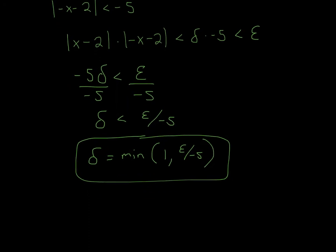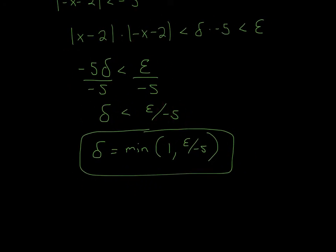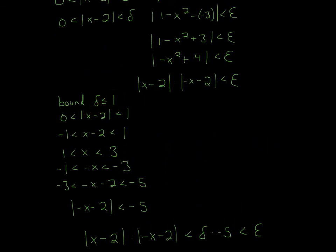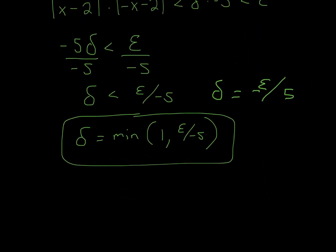Since we want the actual delta, we can set it equal to epsilon divided by 5. Now the final thing to remember is, since we bounded delta to 1, we have to include that in our answer. So we say delta equals the minimum of 1 or epsilon over 5. Always remember: when you do this, you bound it to that number — which will usually be 1 — so make delta equal to the minimum of 1 or your actual answer, epsilon over 5. I hope that helped, and thanks for watching.